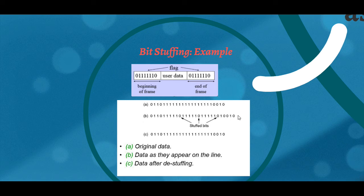The receiver gets this bit stream and decodes it. How does it decode? If five consecutive ones are followed by a zero, it erases that zero. So the result is our original data.